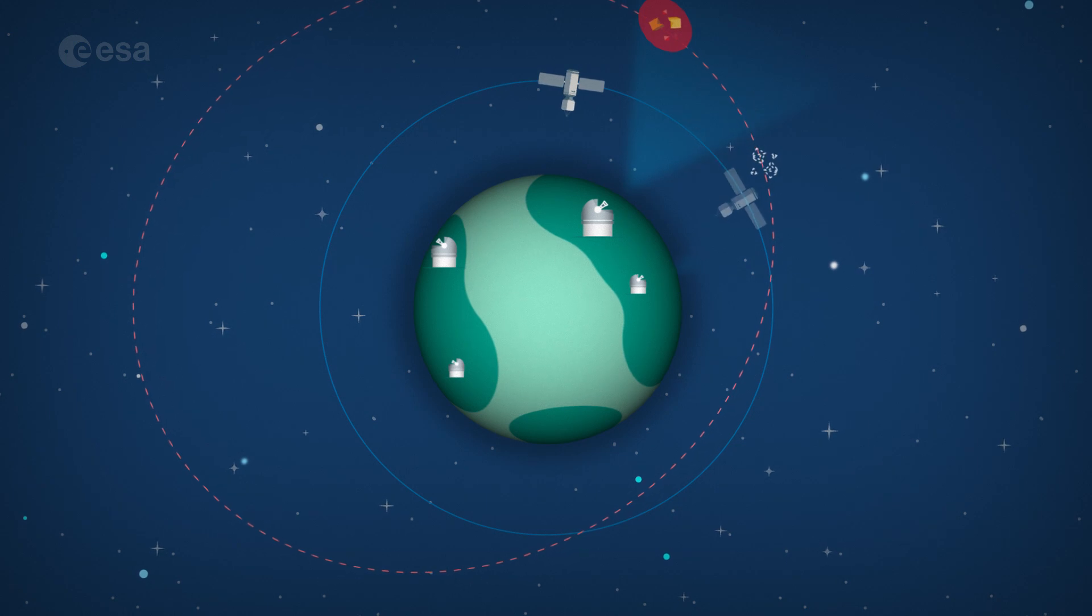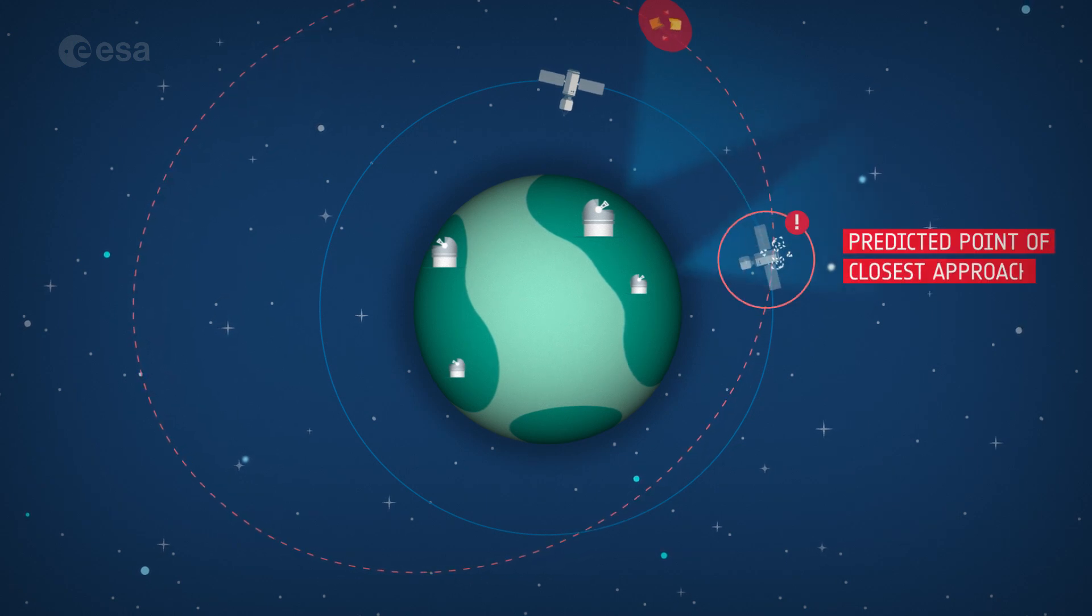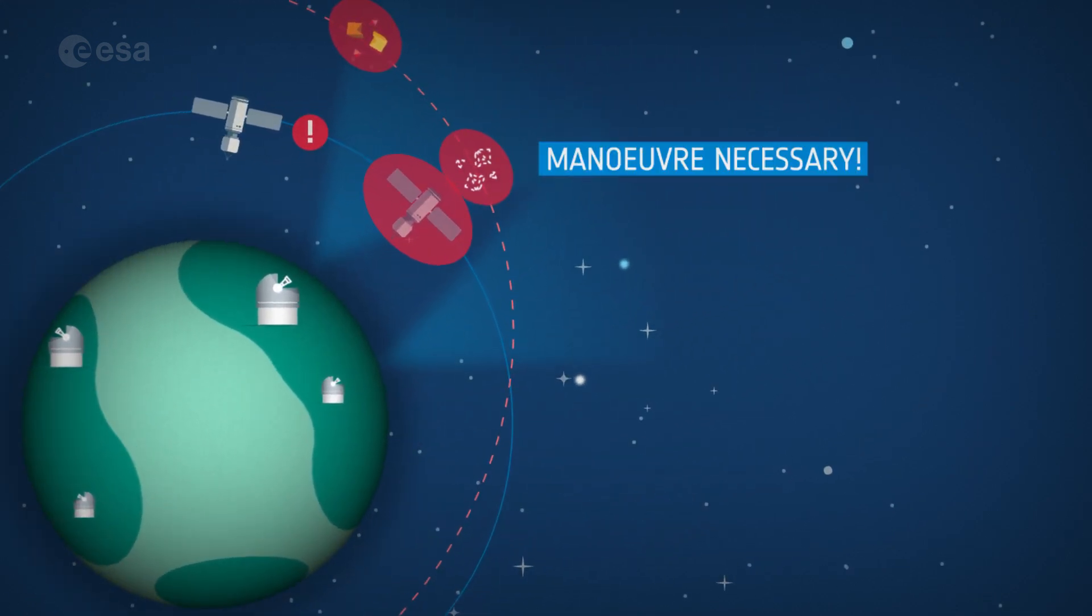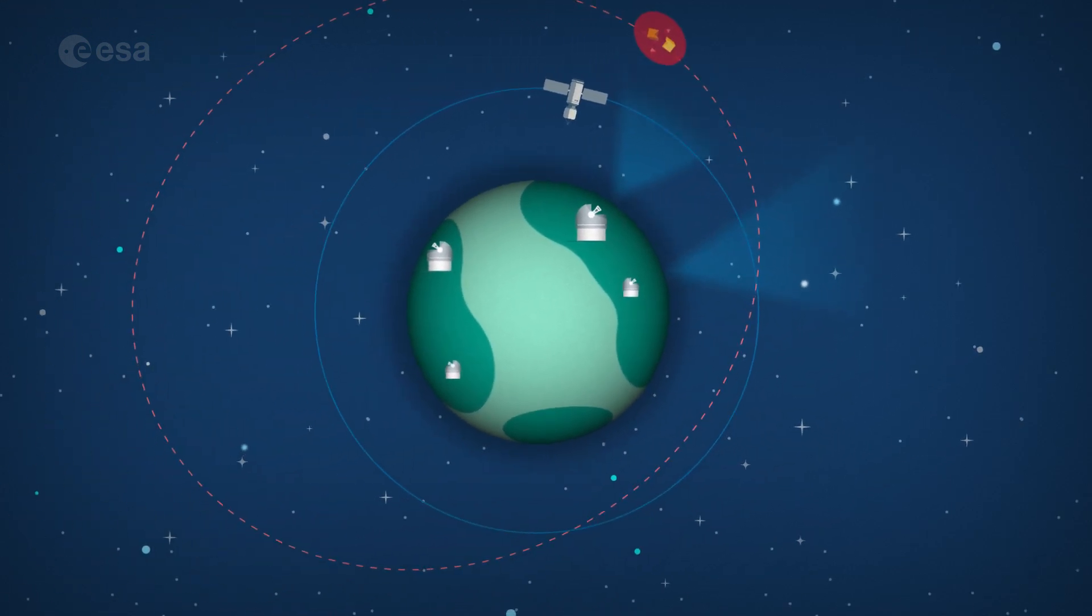Additional observations allow the teams to better predict the probability of a collision. If it remains higher than the acceptable level, usually one in 10,000, the collision avoidance manoeuvre is performed.